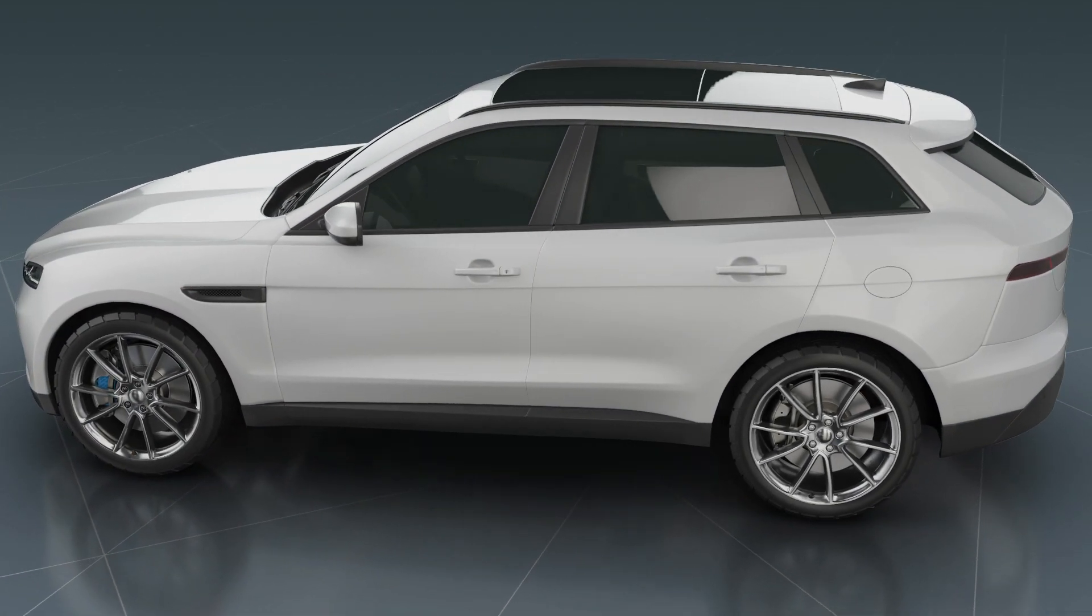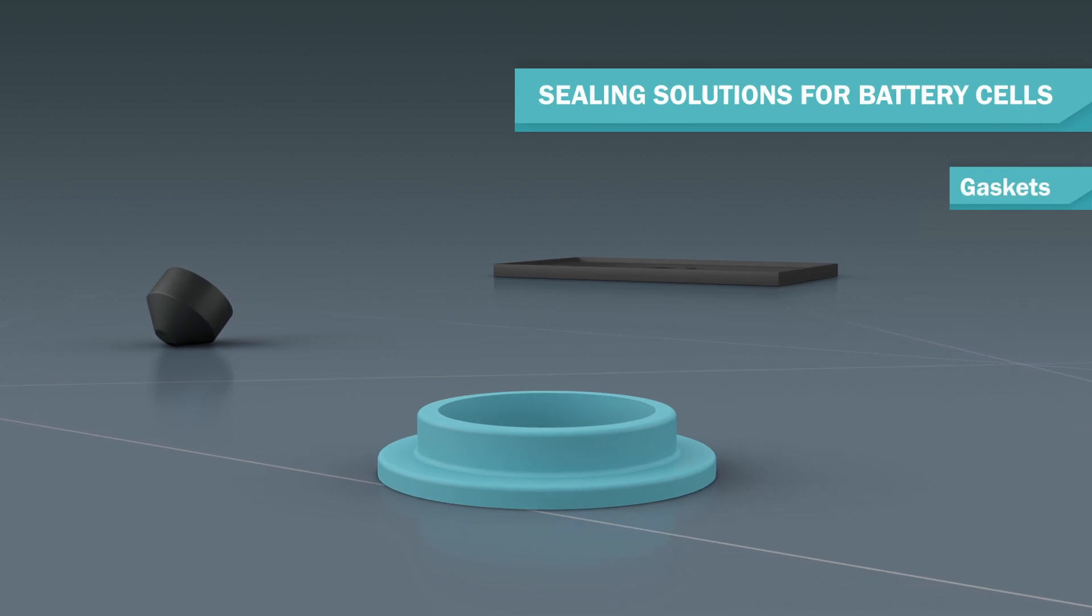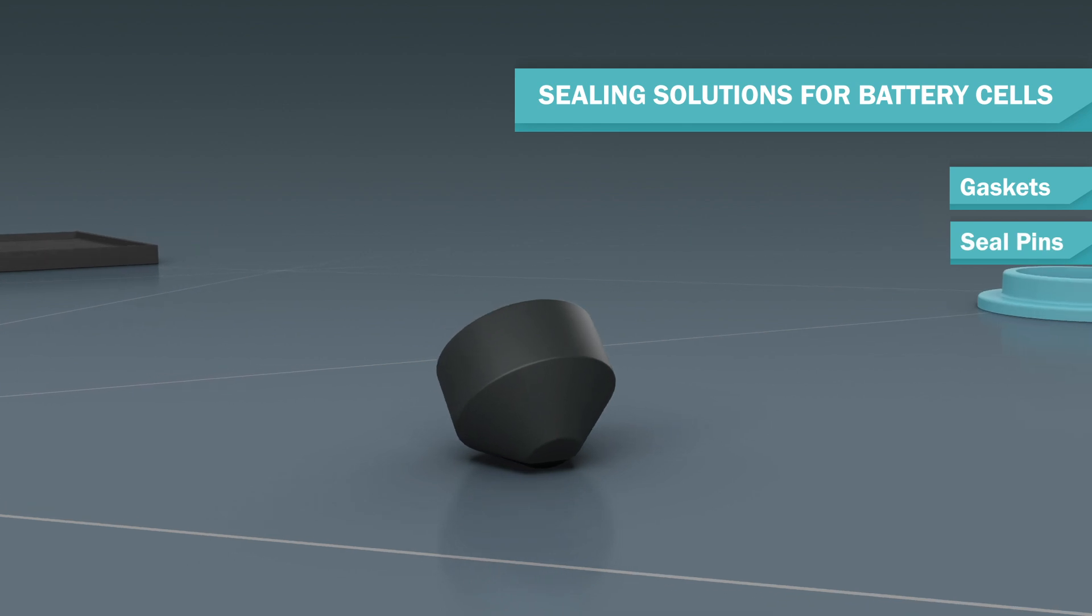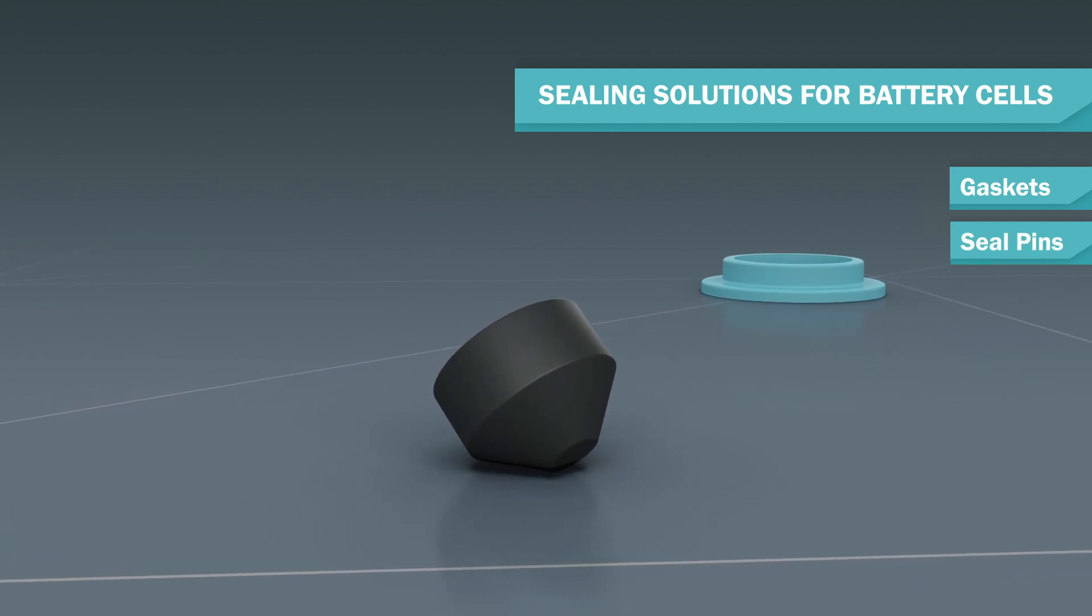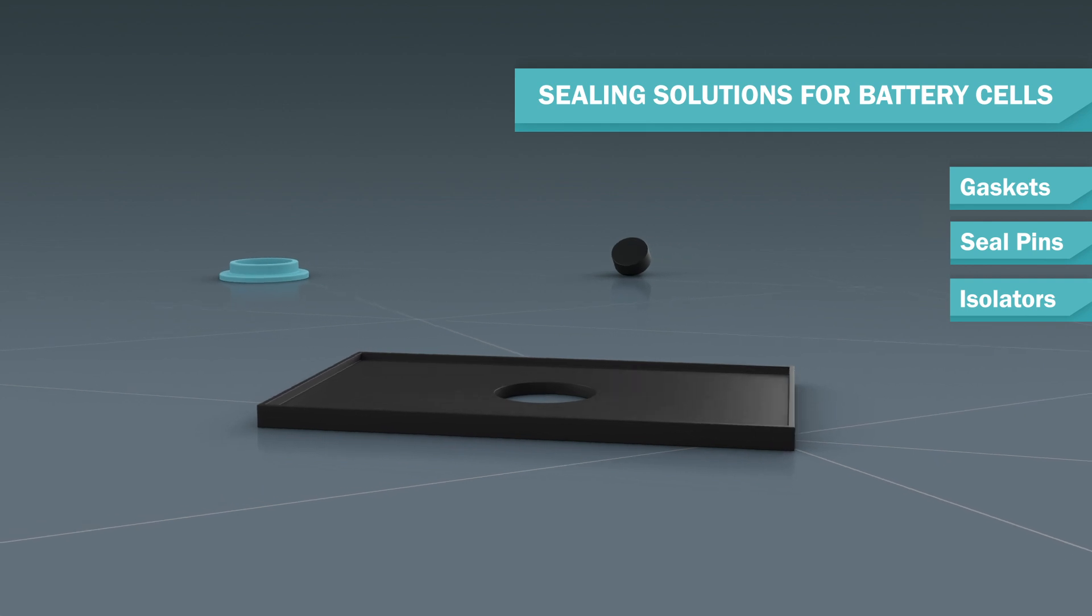Trelleborg Sealing Solutions is your partner for seals that protect the battery cell from moisture ingress and electrolyte leakage, sealing pins which are used to close the electrolyte filling hole, and isolators which prevent short circuits between components.